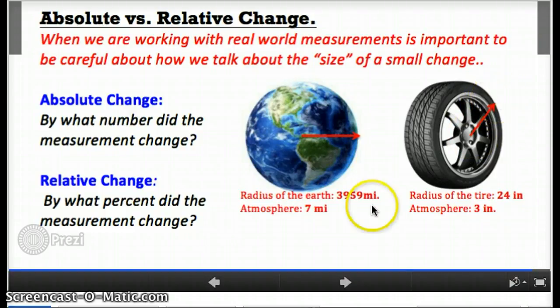At face value, when we just look at the numbers, you might say, oh, it looks like the atmosphere puts a bigger change on the radius of the earth than the tire does. And you might say that because seven is bigger than three, or because seven miles truly is an enormous amount compared to three inches.